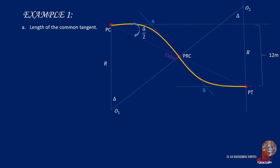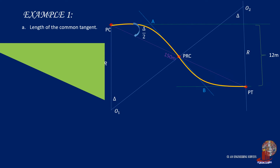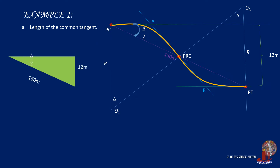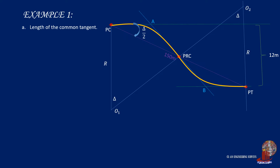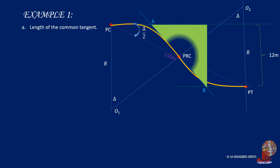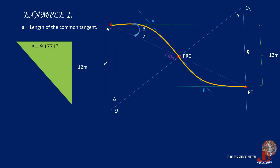The first requirement is the common tangent AB. Using the big triangle with the distance between tangents as a leg and the 150-meter chord as the hypotenuse, the angle between the tangent and the long chord is half of delta. Using sine(delta/2) equals 12 over 150 gives delta/2 as 4.5885 degrees, thus delta equals 9.1771 degrees. With the same simple curve description, delta is the angle included in the triangle containing common tangent AB, so AB is computed as 75.2414 meters.